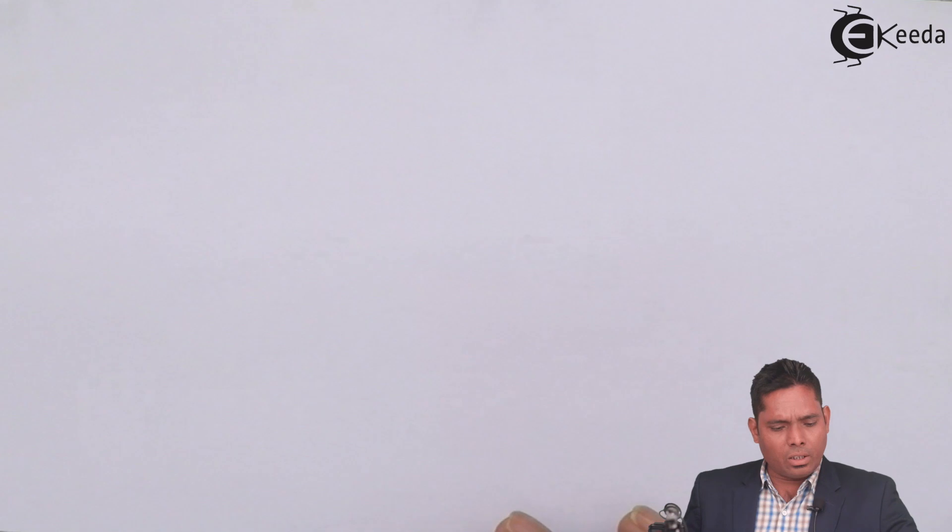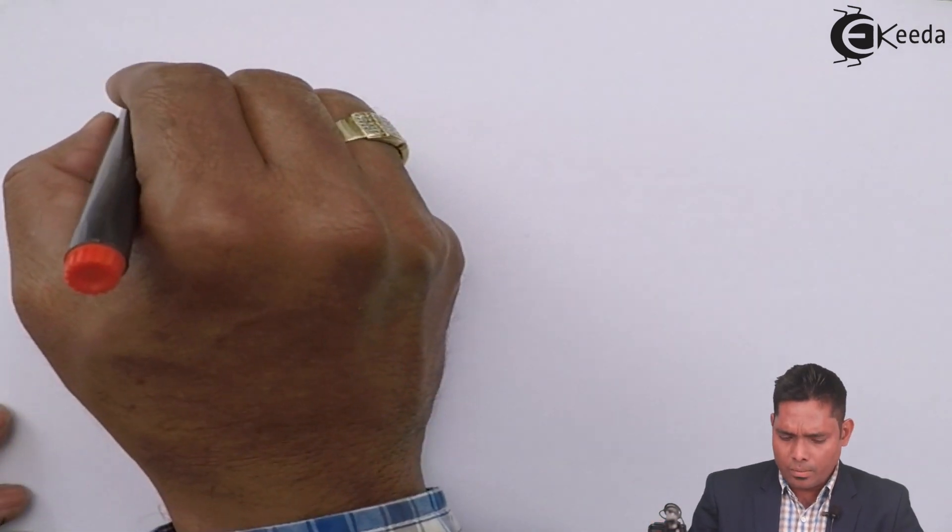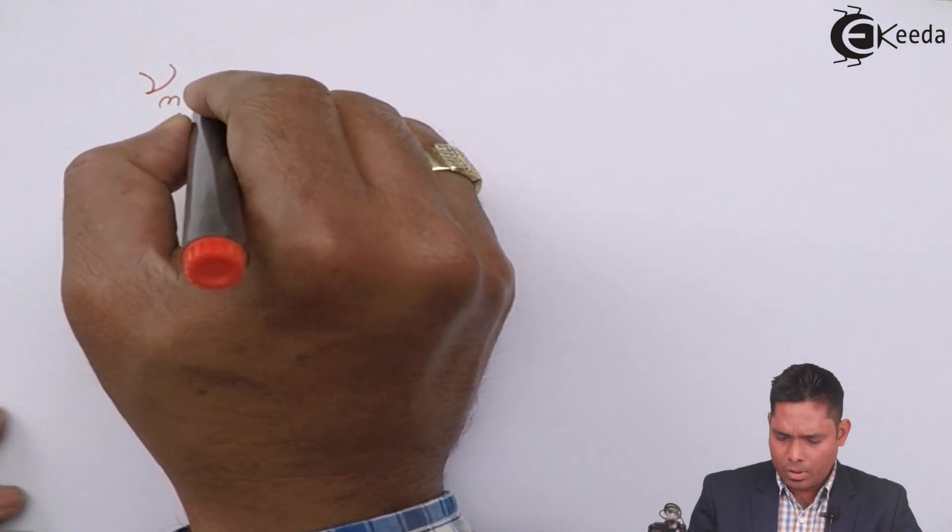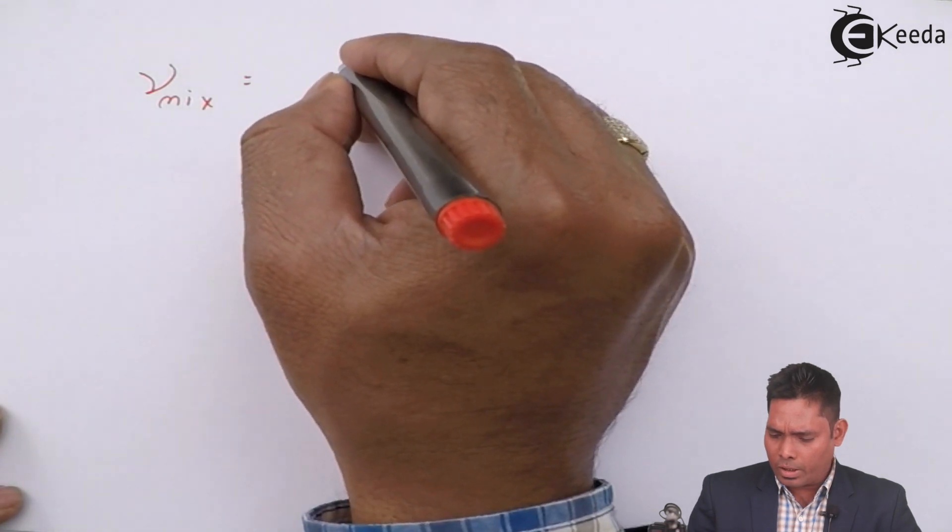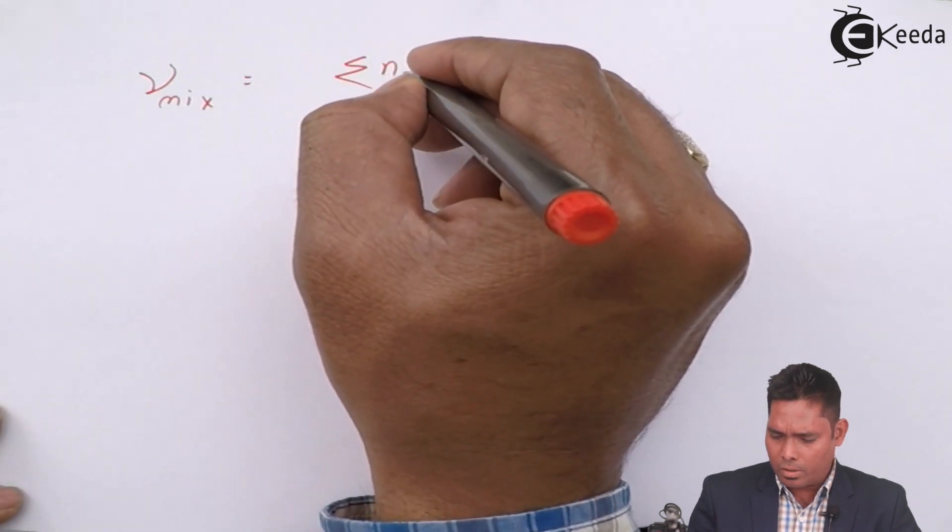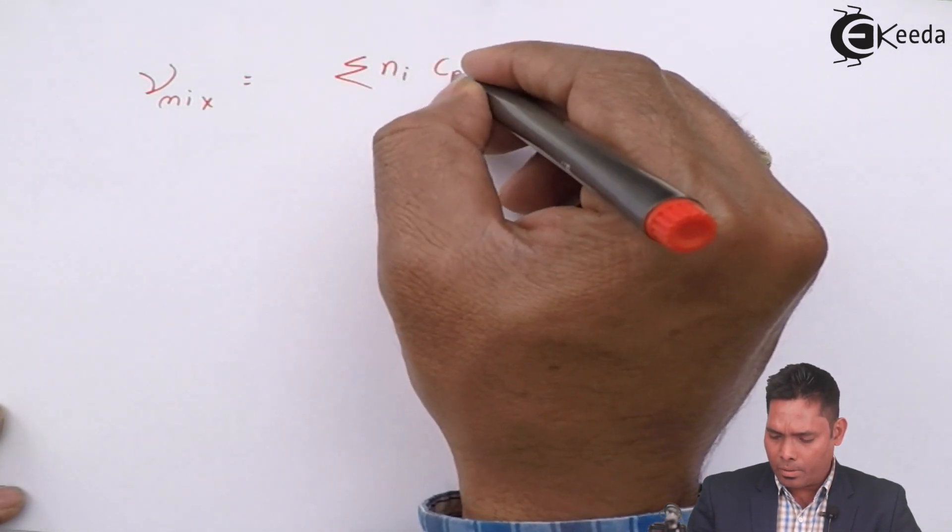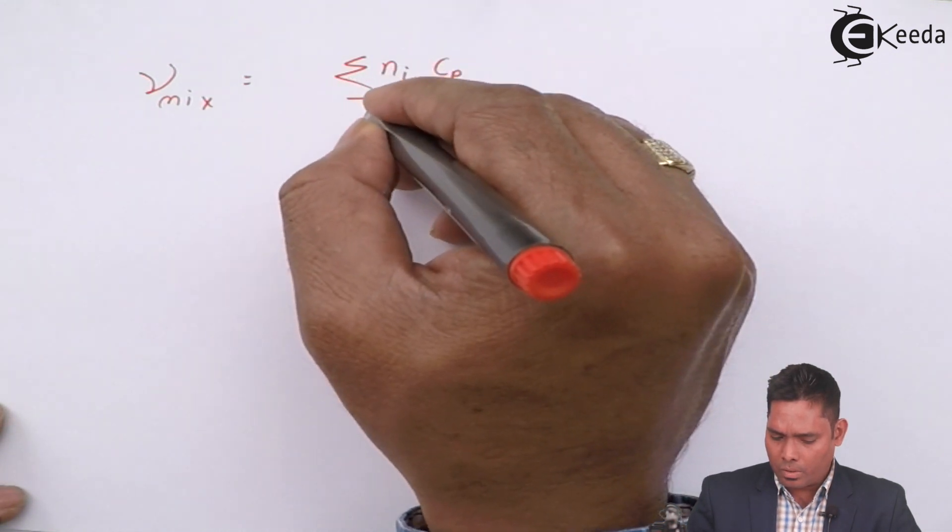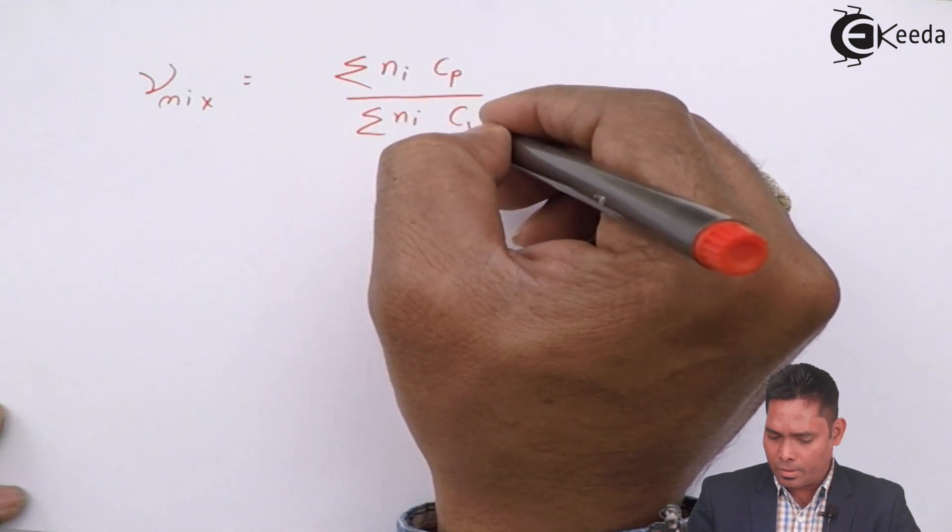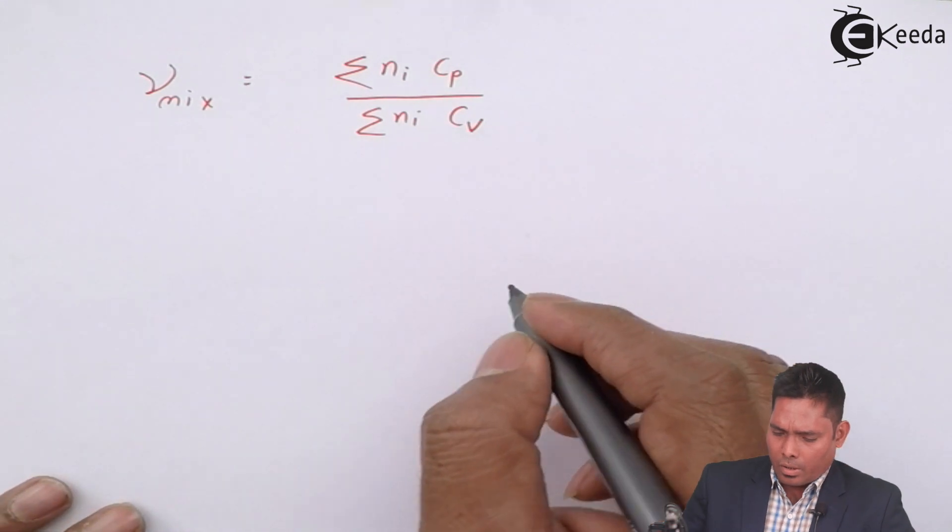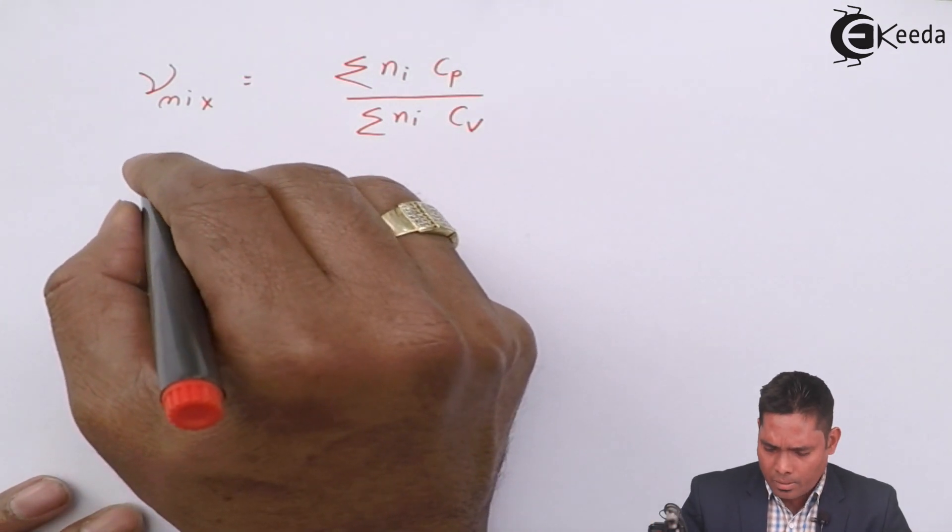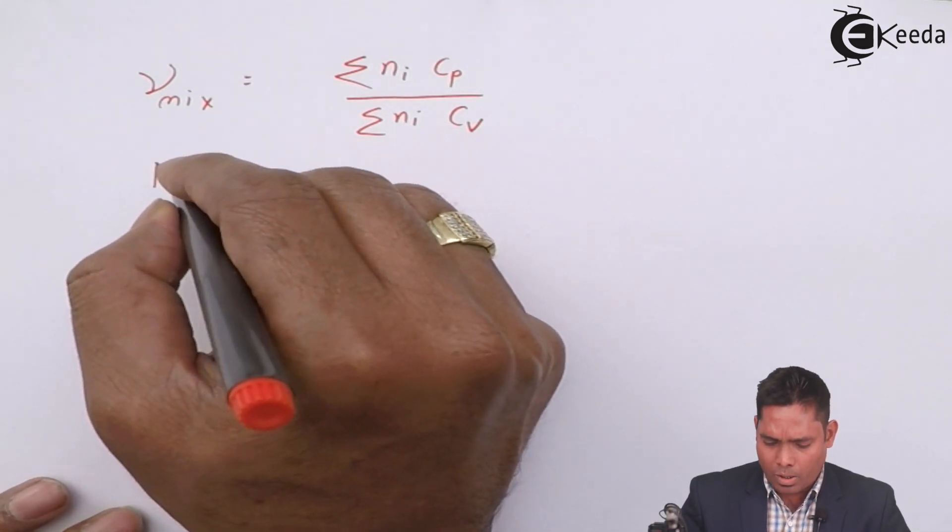Now you have to find the gamma of mixture. The formula we know is sum of all Ni times Cp upon sum of Ni times Cv.